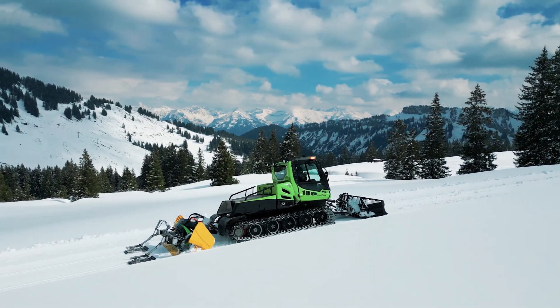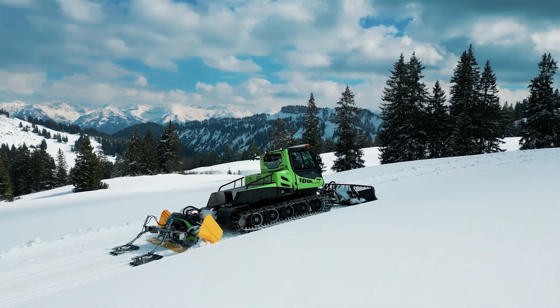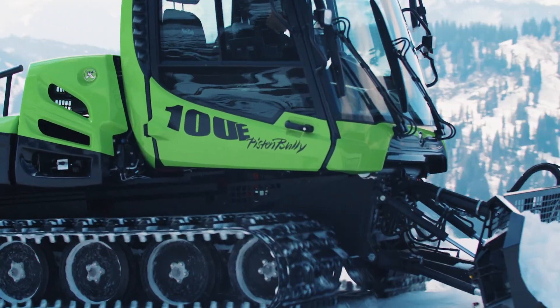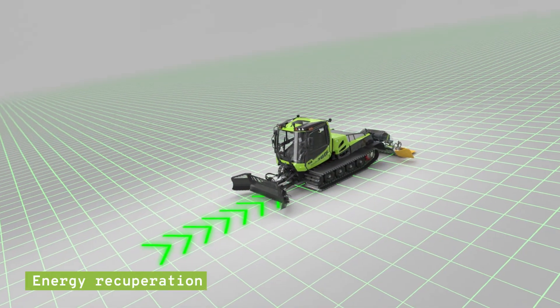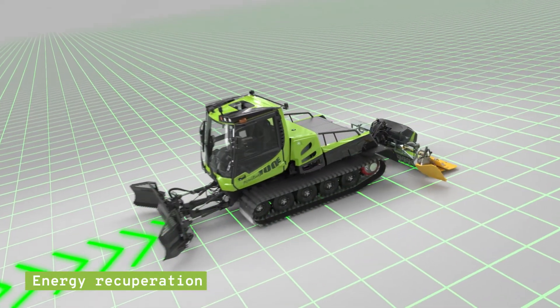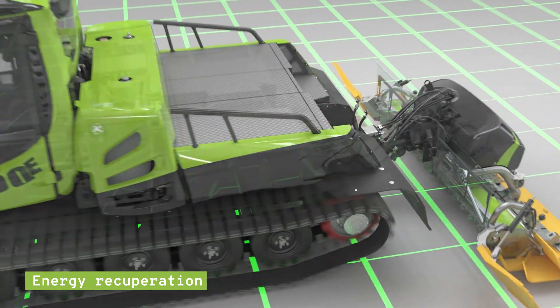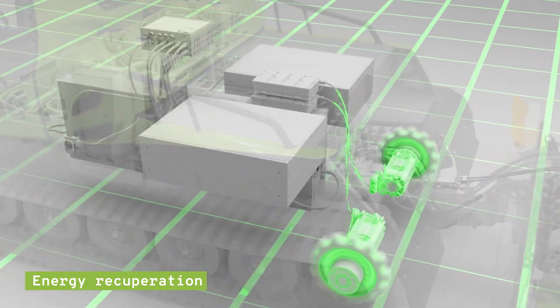The PistenBully 100E drives steplessly up to 20 kilometers per hour. The average driving time is approximately three hours, depending on power consumption. The driving time is extended by the fact that the PistenBully recovers energy during descending rides.